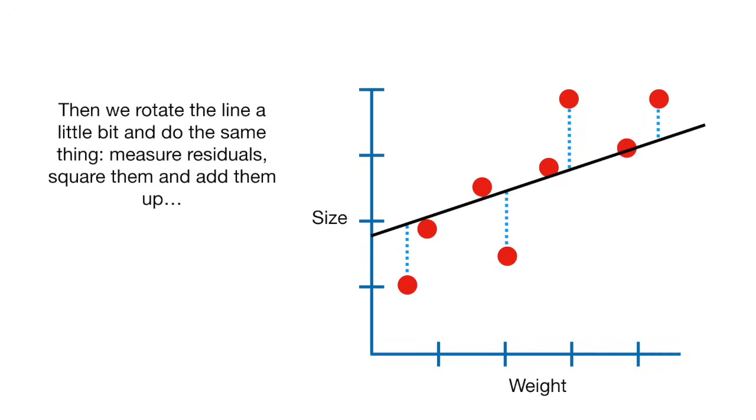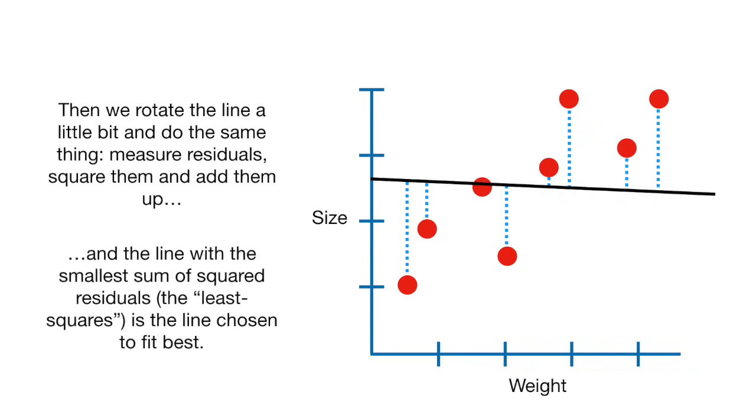Then we rotate the line a little bit and do the same thing. Measure the residuals, square them, and add them up. And the line with the smallest sum of squared residuals, the least squares, is the line chosen to fit best.